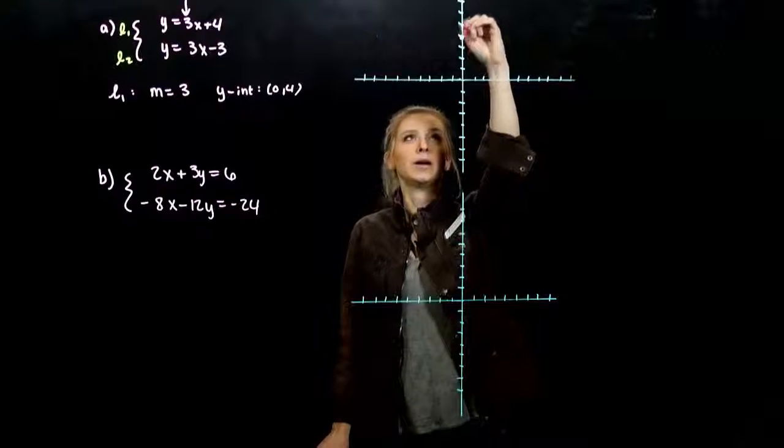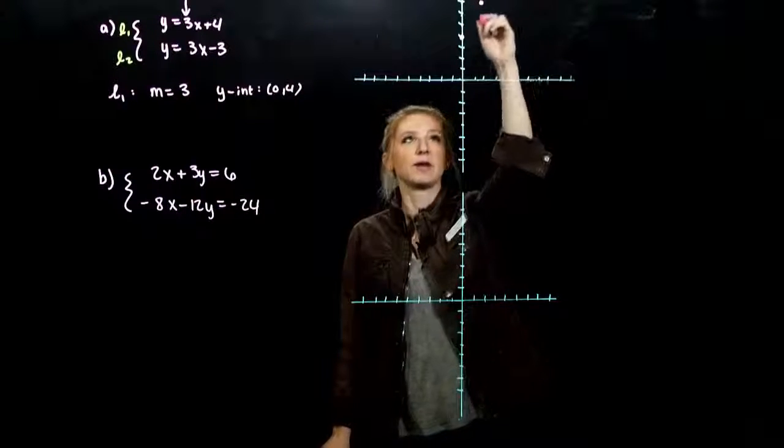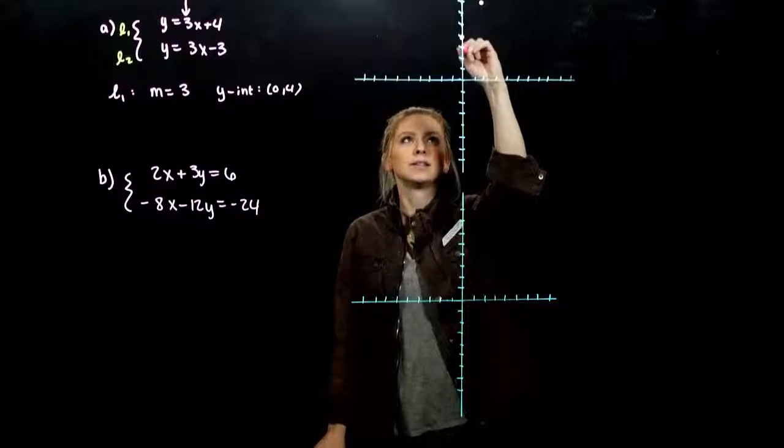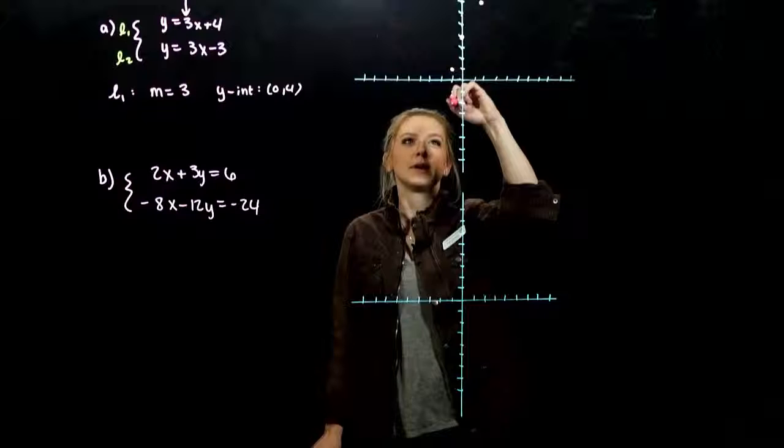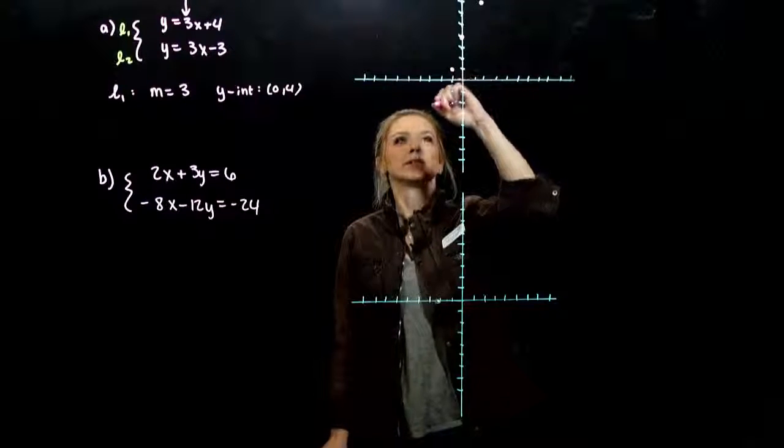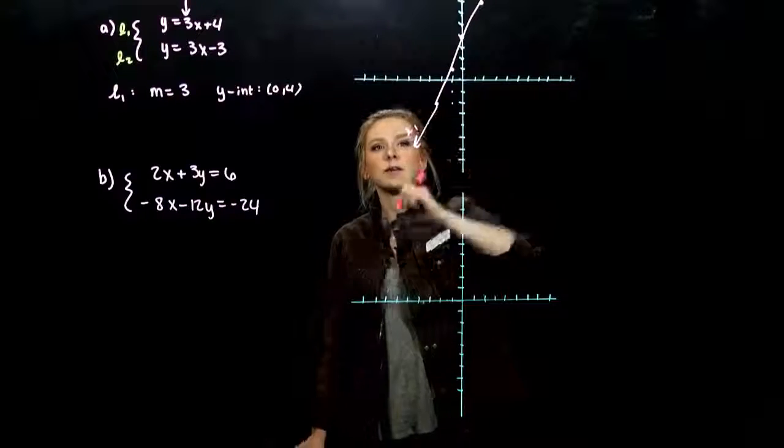From there I move according to my slope. Up 3, over 1. I'm probably out of frame, so what else could I have done? Down 3, back 1. Down 3, back 1. So this is our first line. We call that one L1.